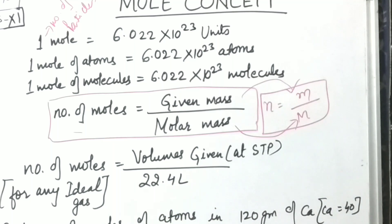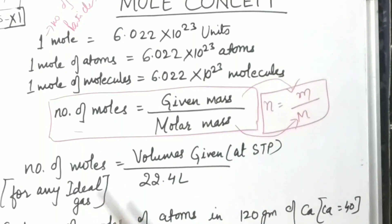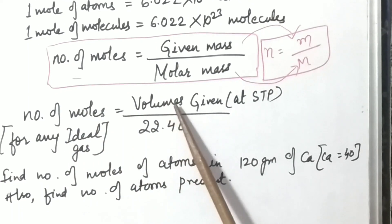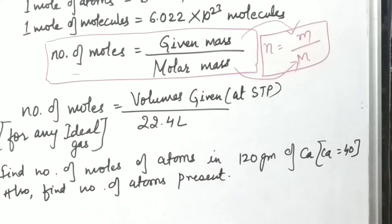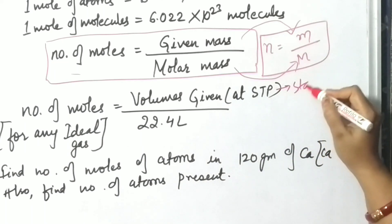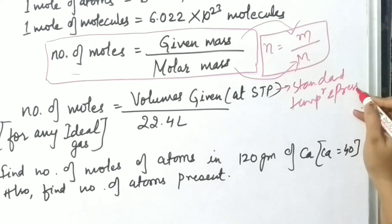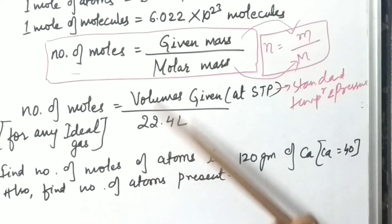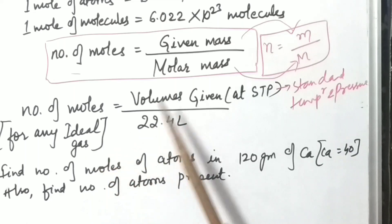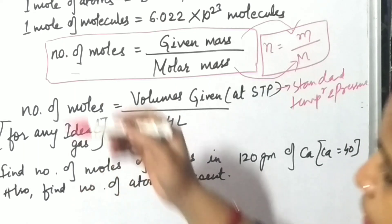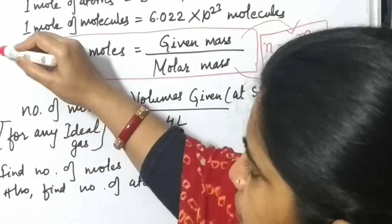This concept is a little bit different for ideal gases. If the concept is related with ideal gases, the formula will change. It will become number of moles equals volume given at STP. What does STP mean? Standard temperature and pressure. So here it will become volume given by 22.4 liters. This is the volume for ideal gases, that's why this formula is applicable for gases, while the previous formula is applicable for solids or liquids.